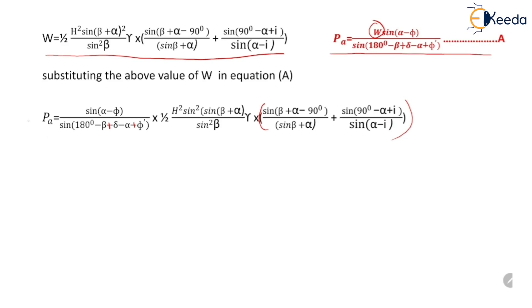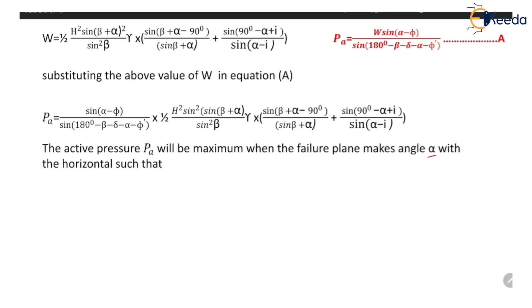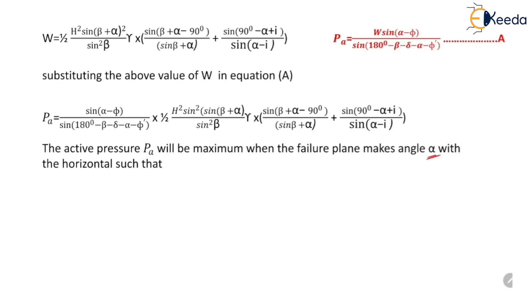The active pressure PA will be maximum when the failure plane makes an angle alpha with the horizontal such that the partial derivative of PA with respect to alpha equals zero. By computing this derivative, the obtained value of alpha can be substituted back into the expression so that the value of PA obtained is the maximum value. Thank you for watching.